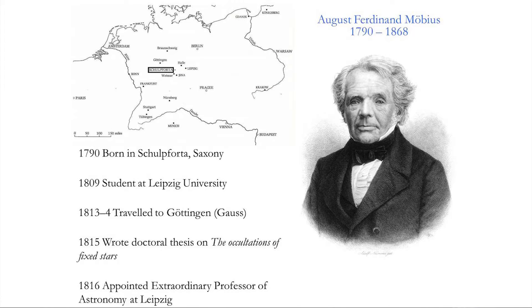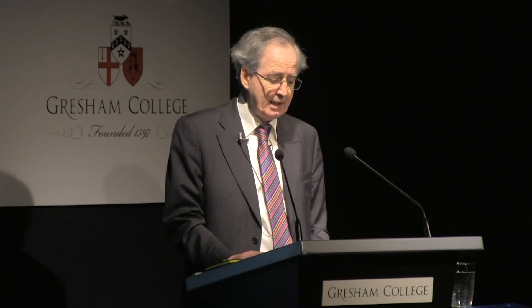August Ferdinand Möbius was born 17th November 1790 and died 26th September 1868. During his lifetime, the pursuit of mathematics in Germany was transformed. In 1790 it would be hard to find one German mathematician of international stature; by the time he died, Germany was the home and training ground for the world's leading mathematicians, whose work spread to influence the higher mathematical activity of the rest of the world.